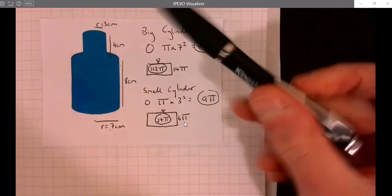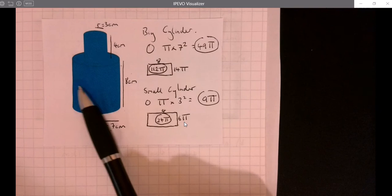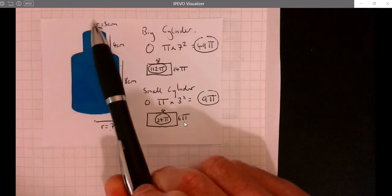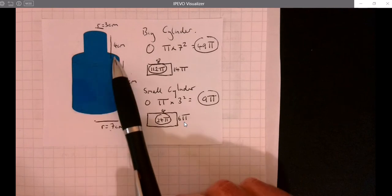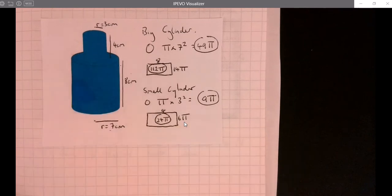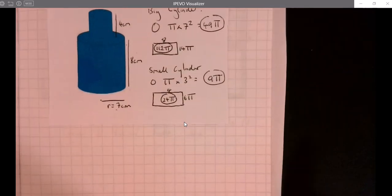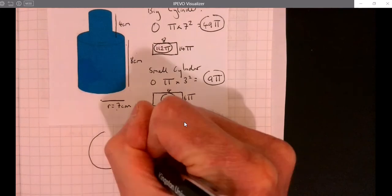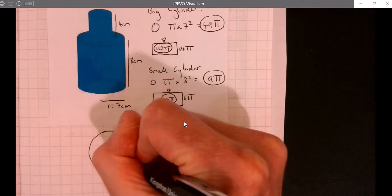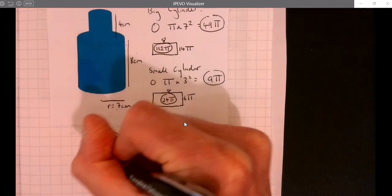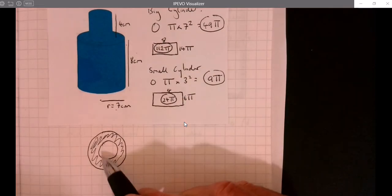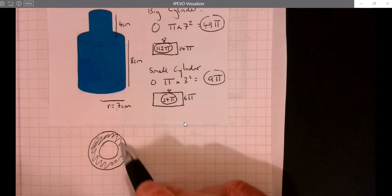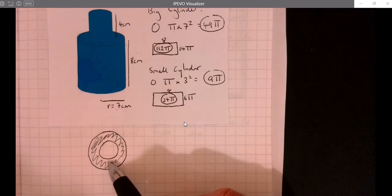Which bit's missing? We've got the bottom circle, the curved part, the top circle, the smaller curved part, and then we need this bit, this ring part. It's this bit just here, it's like a polo, we just want this part. That's the big circle take away the small circle.